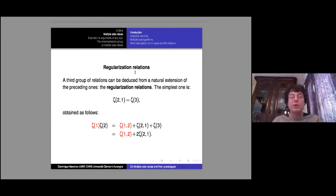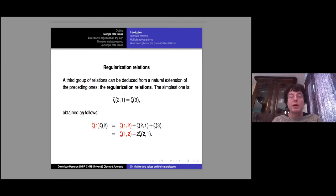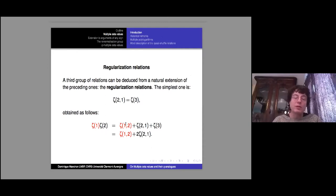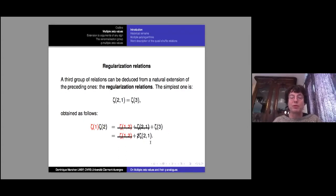There are also regularization relations. The first was already known by Euler: ζ(2,1) = ζ(3). Of course ζ(1) doesn't exist, but you treat it as something indeterminate. ζ(1,2) is also divergent, marked in red. You apply quasi-shuffle and shuffle relations formally, equate the two right-hand sides, the two infinite terms cancel, and you are left with ζ(3) = ζ(2,1).